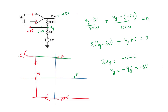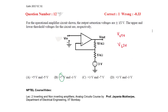The upper threshold voltage is plus 7 volts and the lower threshold voltage is minus 3 volts. Therefore, option B is the correct choice.